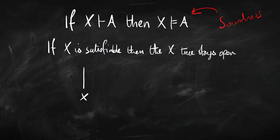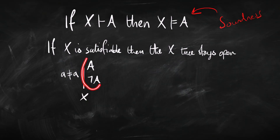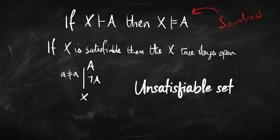When does a branch close? Well, when you put an X at the bottom. And when can you put an X at the bottom of a branch? Either when you've got an A and a not-A on the branch, or when you've got a non-identity statement of the form A doesn't equal A. In either case, what you've got along that branch is an unsatisfiable set of sentences. So the only way you can apply that rule — putting the X at the bottom of a branch — is with an unsatisfiable set of sentences.